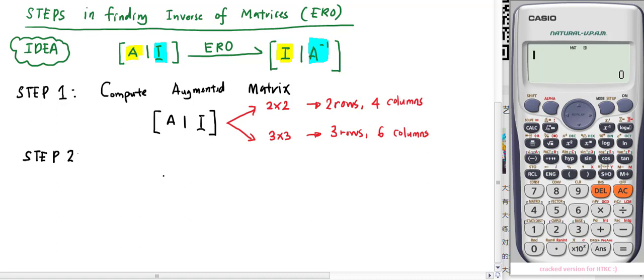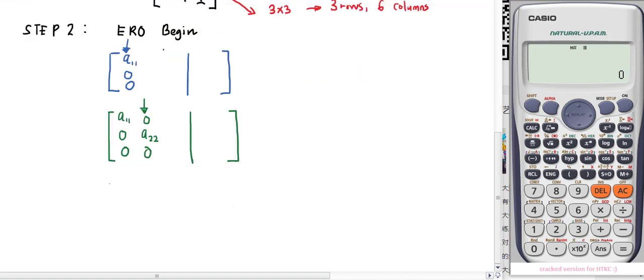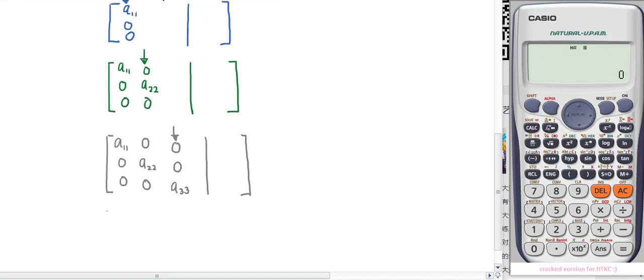Step 2: Start with row operations. Mostly we use multiplication to get ones and addition to make elements become zero. First, start with the first column, locking a11 while the other two become zero. In the second column, lock a22 with the others as zero. Same goes for the third column—lock the leading diagonal a33 and the others must be zero.